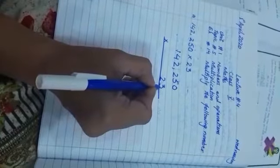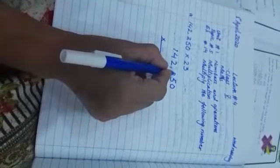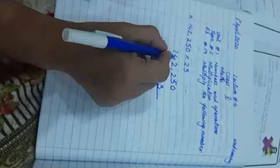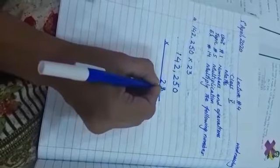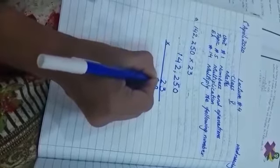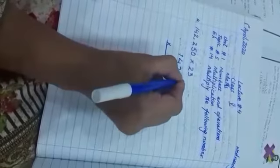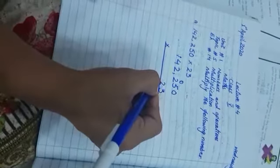First we will start with units, then we will multiply by tens and hundreds. We multiply the 6-digit number: 3 times 0 is 0, 3 times 5 is 15.